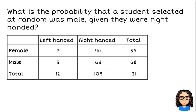Let's look at a different question here. What's the probability a student selected at random was male given - oh, now there's a big word I need to look out for. This is now dealing with a conditional probability. So as soon as you see that word 'given', I need you to think about conditional probability.